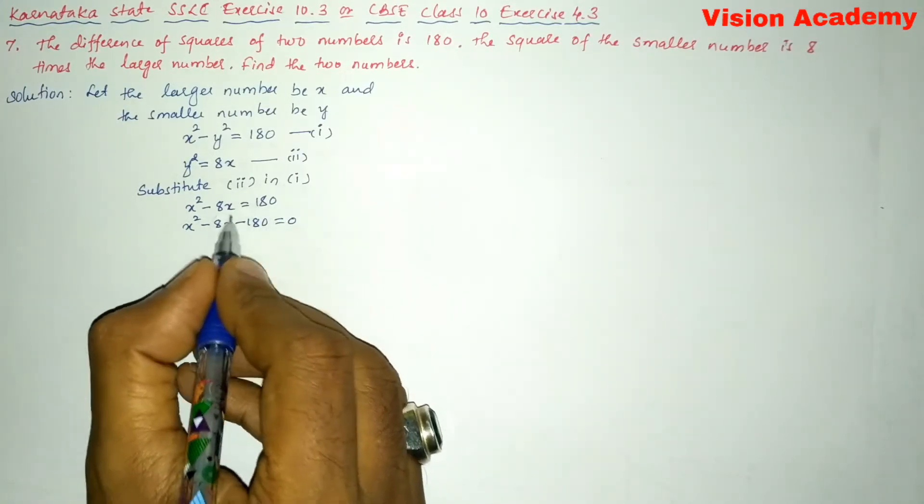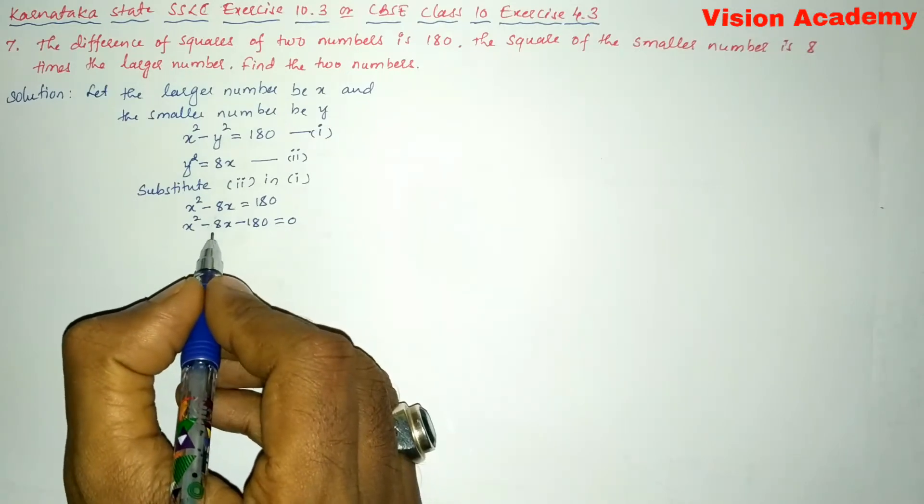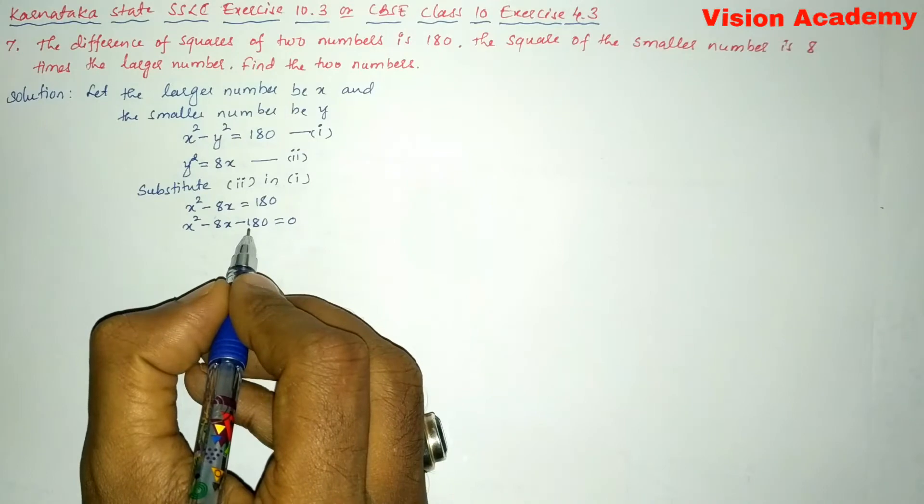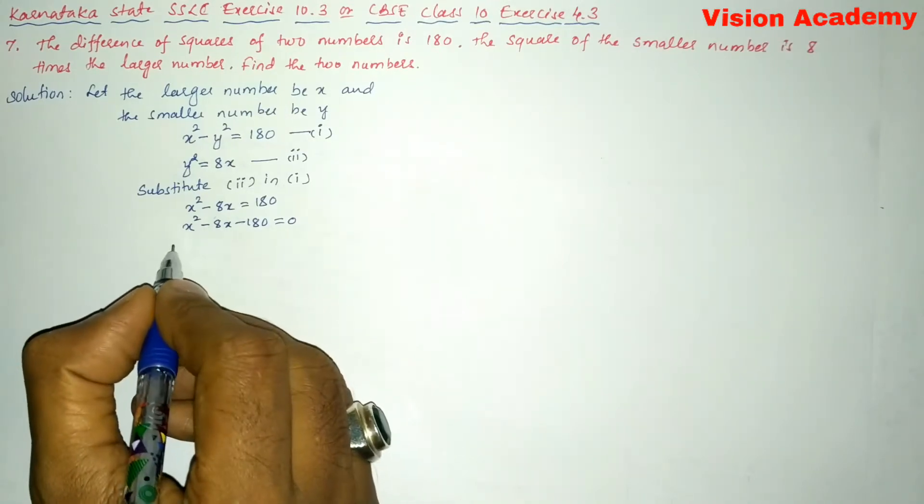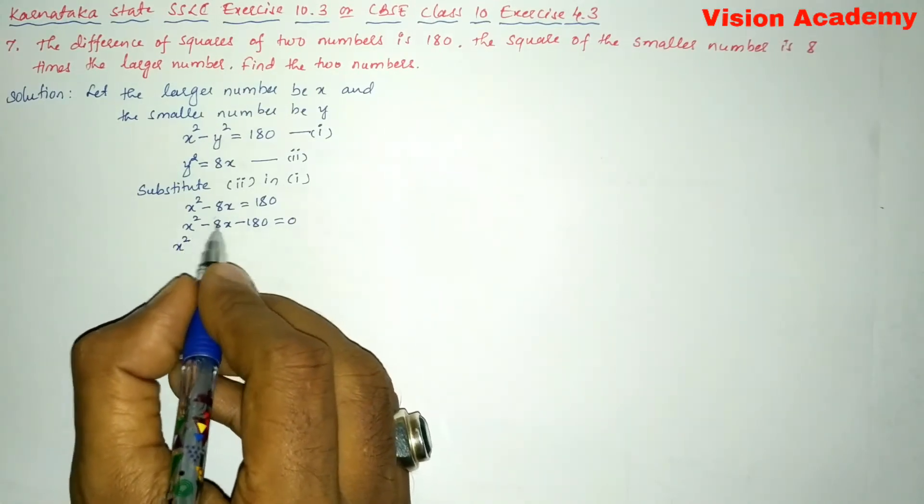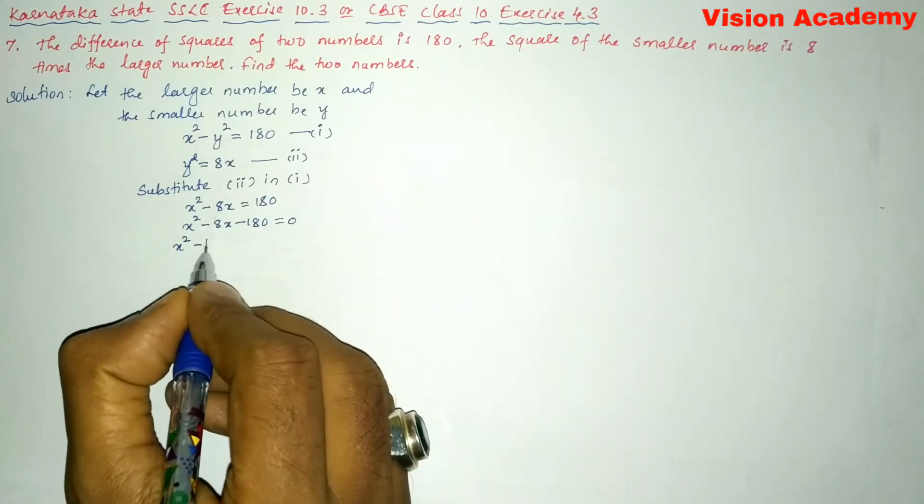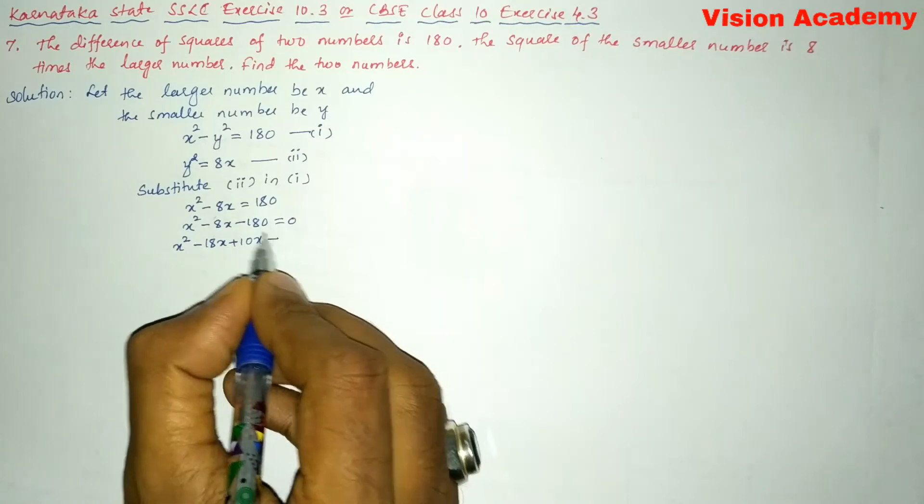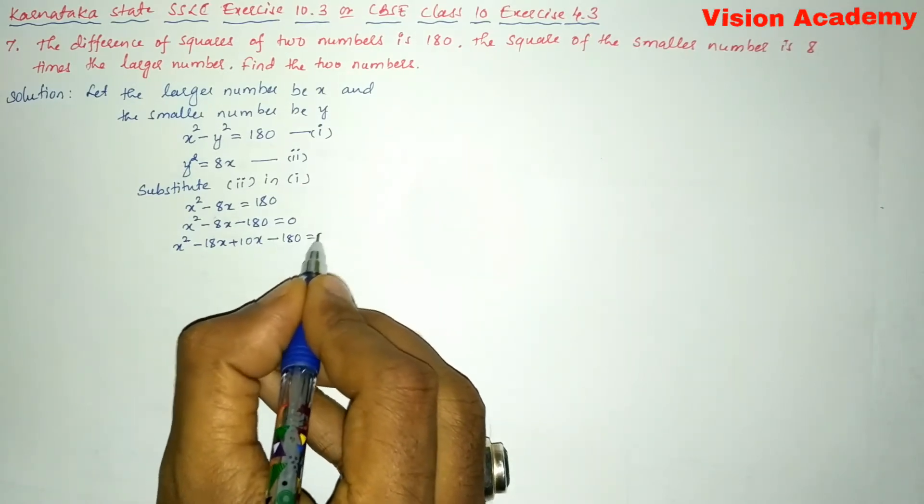Here we have to split this middle term in such a way that if I add two numbers, I must get -8, and if I multiply the same two numbers, I must get -180. So x² as it is, and we split the middle term as -18x + 10x and -180 = 0.